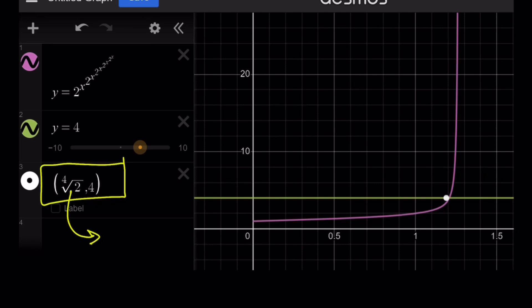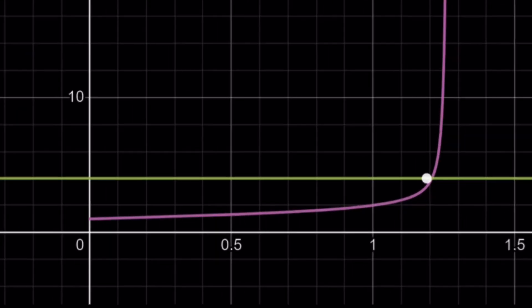The negative one obviously isn't shown here. Here, the fourth root of 2, comma 4, which is supposed to be a solution, is not at the intersection point. Now, why is that happening?